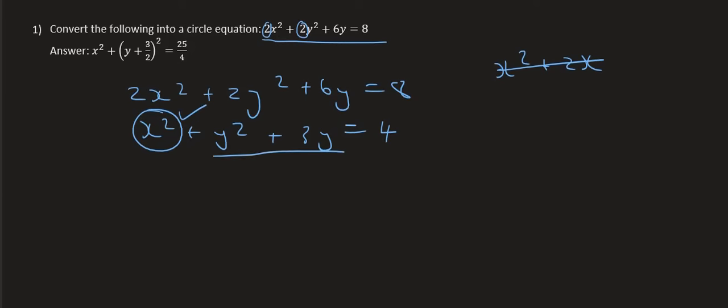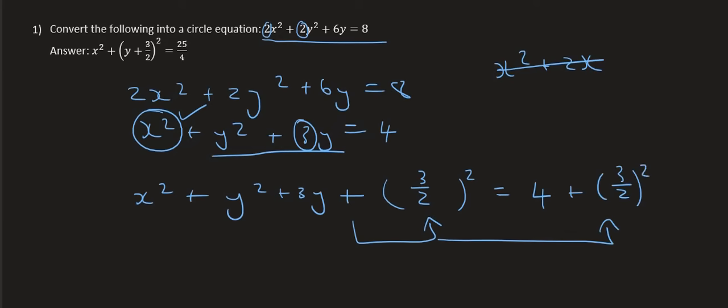So it's going to be x squared plus y squared plus 3y plus, then we always plus whatever this number is, over 2, and then we square it. Then we write down the 4 that was already there. And any numbers that we have added on this side must also be added on that side. So that will be 3 over 2 squared.